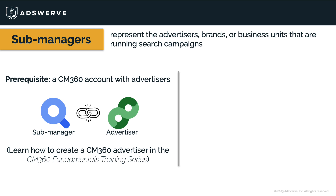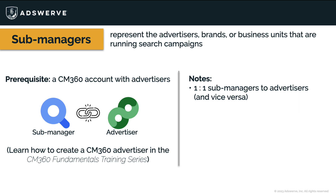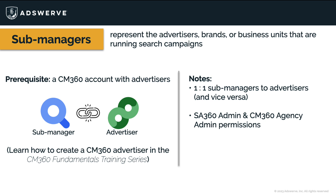Before we create a sub-manager, let's review a couple of things. First, a sub-manager can only be linked to one CM360 advertiser, and a CM360 advertiser can only be linked to one sub-manager. Second, you need admin permissions in SA 360 and agency admin permissions in CM360 to create sub-managers. Finally, we highly recommend that you match your sub-manager's name and currency to your advertiser's name and currency. Once you link a sub-manager to an advertiser and set the currency, you cannot change that setting or start over by linking the advertiser to another sub-manager.